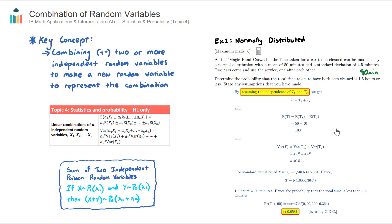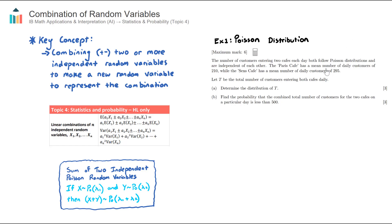That's the first example for random variables following a normal distribution. Let's now look at a question for two random variables that follow a Poisson distribution. In this question we have two cafes — the Paris cafe and the Sens cafe — and the number of customers entering each cafe both follow a Poisson distribution and are independent of each other, since they're in separate locations. The Paris cafe has a lambda of 210 (expected daily customers) and the Sens cafe has a lambda of 295. We're told to let T be the total number of customers entering both cafes daily, and part B asks a probability question.